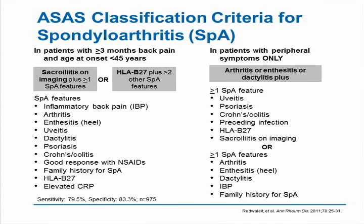One can arrive at the diagnosis of axial spondyloarthropathy by one of two means. One is to have sacroiliitis on imaging — either plain x-ray or MRI — plus one or more spondyloarthropathy features. Another way is by having HLA-B27 positivity plus two or more SPA features. The sensitivity and specificity of these criteria are listed on the left of the slide.